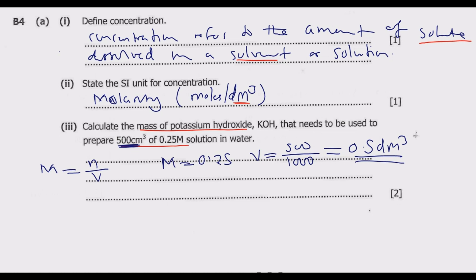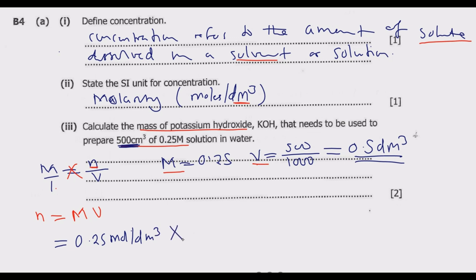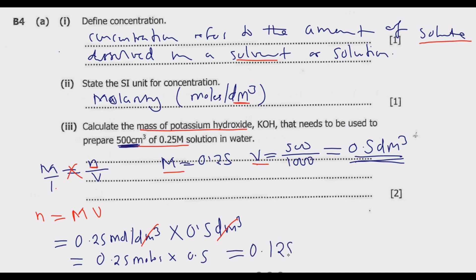Now that we know molality and volume, we cross-multiply to solve for n: n = molality × volume = 0.25 mol/dm³ × 0.5 dm³. The dm³ units cancel, giving us n = 0.125 moles.